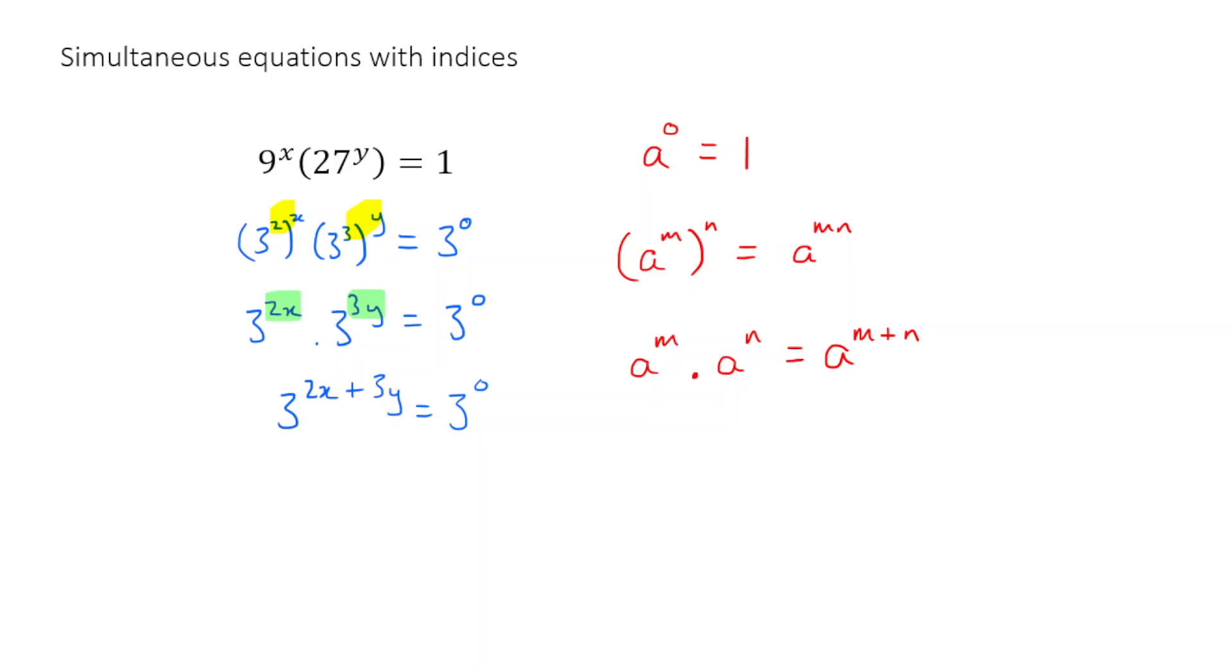And so now both left and right hand side are in the form of base 3. And so if that's the case, I know that these powers here must be equal. So I can simplify down to 2x plus 3y is equal to 0. So to clarify, what has just happened? In effect, we have taken this difficult equation here, which involves indices and powers, and we have converted it to a simple form, 2x plus 3y is equal to 0. And we're going to do the same thing with the next equation.